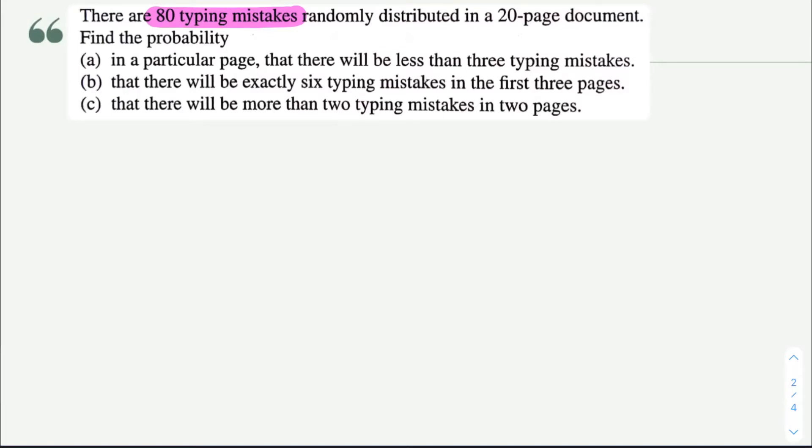But what you have over here is only 20. They say that it's randomly distributed in a 20 page document, so basically 20 page document is like a space interval. So what is it that there is a condition that is something countable and you have a space interval? That means it's a Poisson distribution.